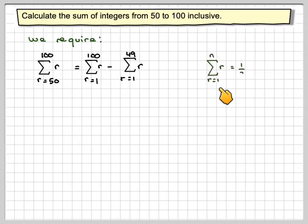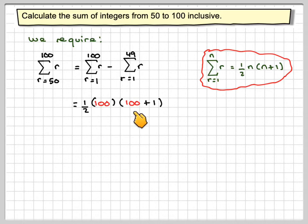So that, and we know that the sum of the first n positive integers is a half n, n plus 1. So applying that to here, that's going to be a half of 100 times 100 plus 1. And then for this one, we'll need to subtract a half of 49 times 49 plus 1, which will give me 3,825.